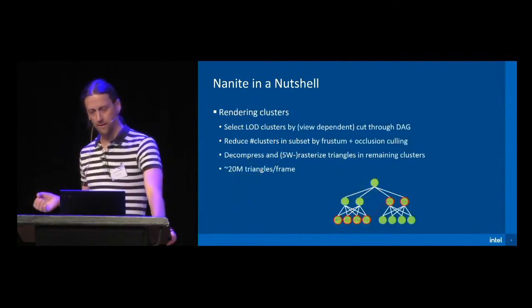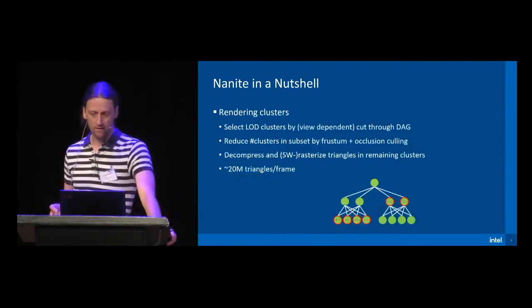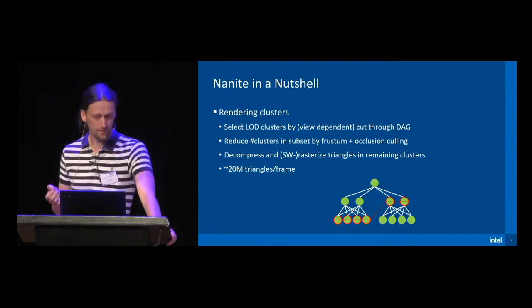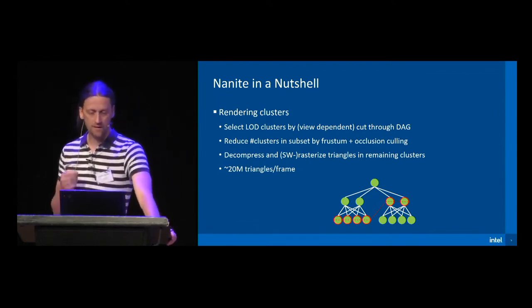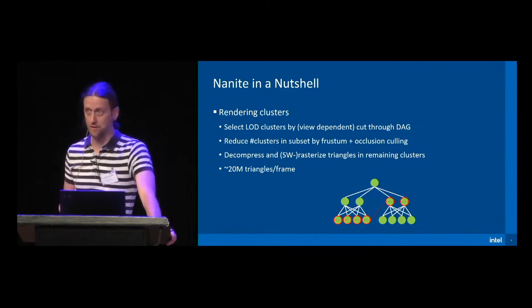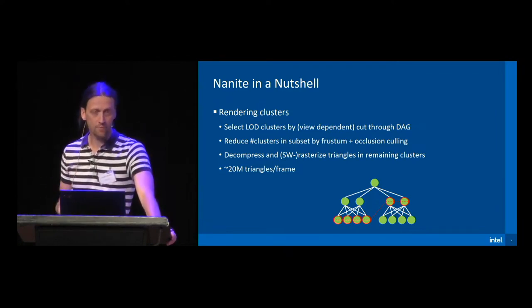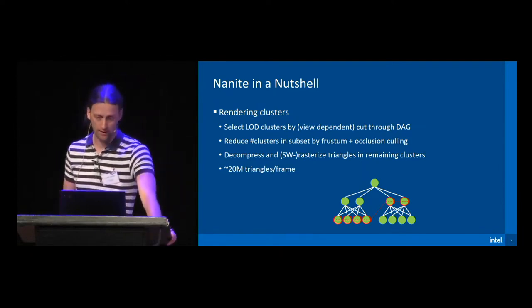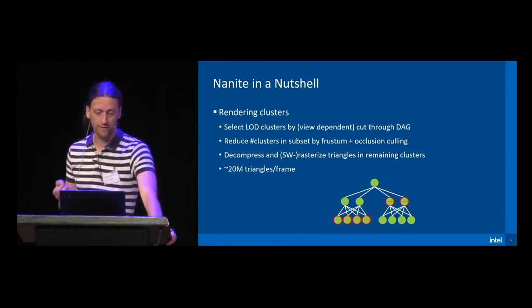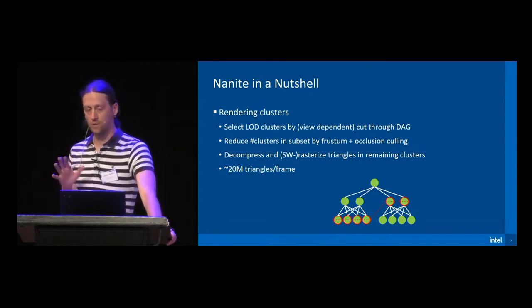In terms of rendering, Nanite traverses the DAG and essentially performs a cut through it, indicated by the red line in our example. This cut selects a subset of clusters that fulfill certain view-dependent LOD requirements. The number of clusters in the subset are further reduced by frustum and occlusion culling, and the remaining clusters are decompressed and the resulting triangles are processed by a rasterizer. On average, Nanite roughly rasterizes 20 million triangles per frame.